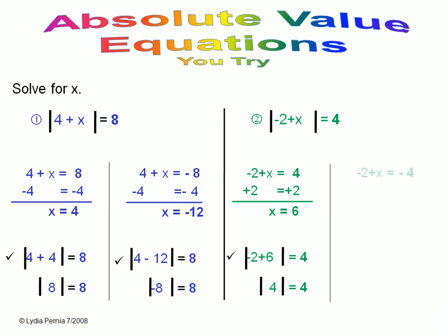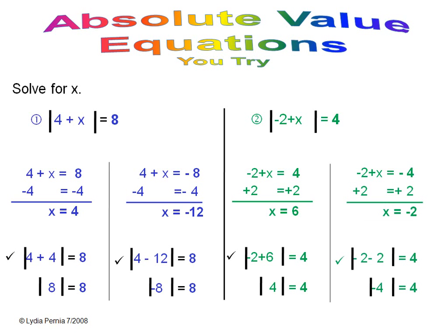The next possibility is negative two plus x is equal to negative four. Again, add two to both sides. You have x equals negative two. You check your work, and our answers are x equals six and x equals negative two.